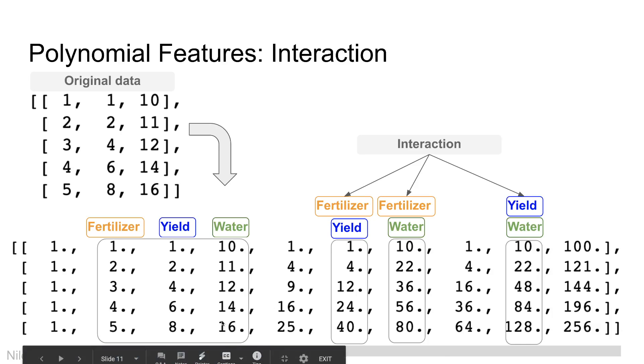Five squared is 25, four squared is 16, three squared is nine and so on. The square column for water is right at the end where 16 is 256, 12 is 144, 10 is 100. These are the interaction terms that we can create using the polynomial features method in scikit-learn.